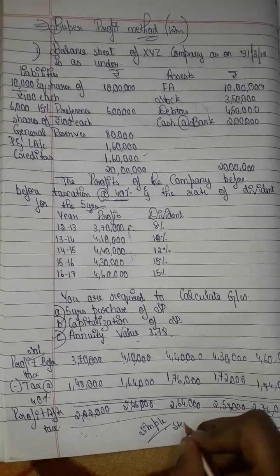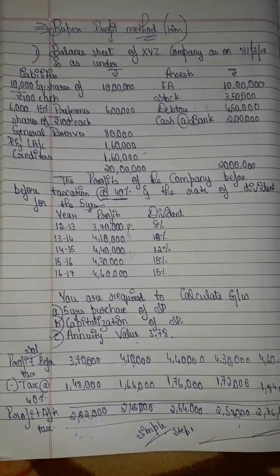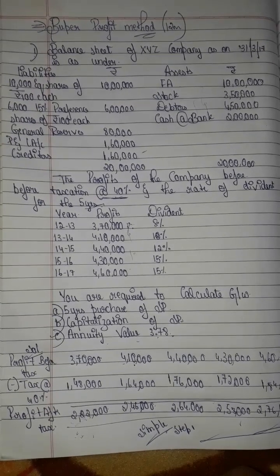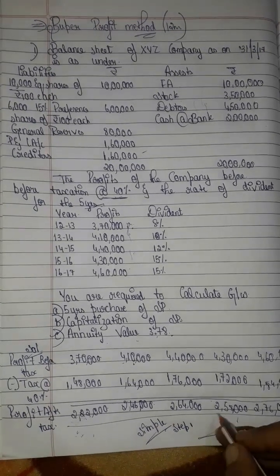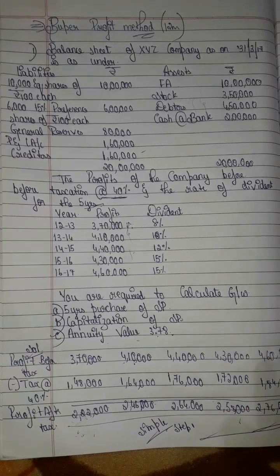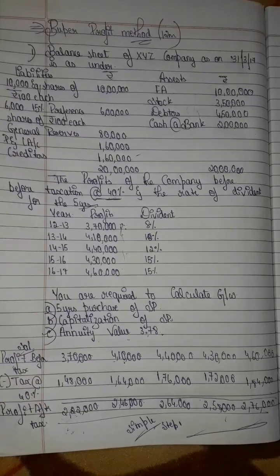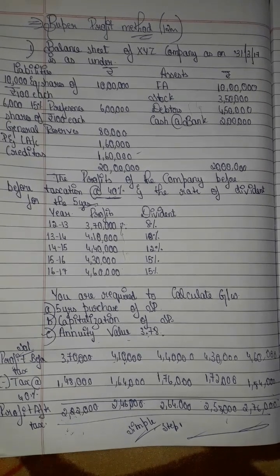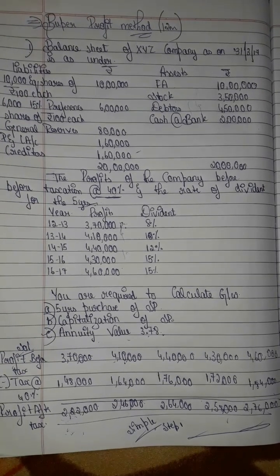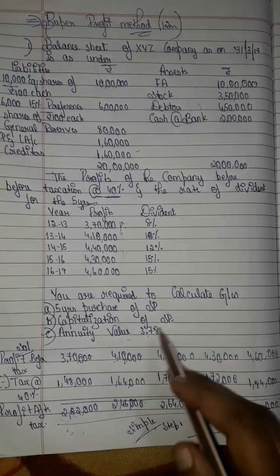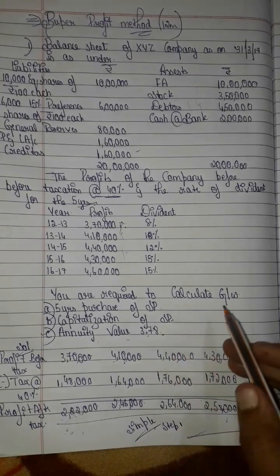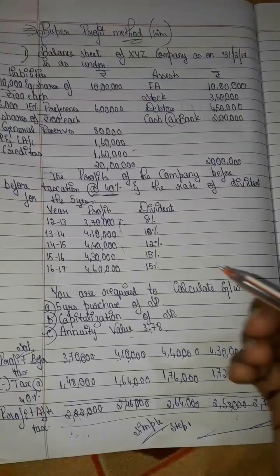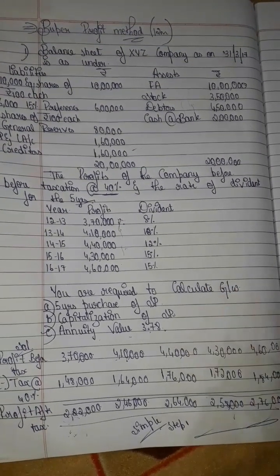Step 1: We will avoid the weighted average method because the profit fluctuates, and use the simple average method instead. There are many steps, as covered in previous videos, but with goodwill we will close the final step.